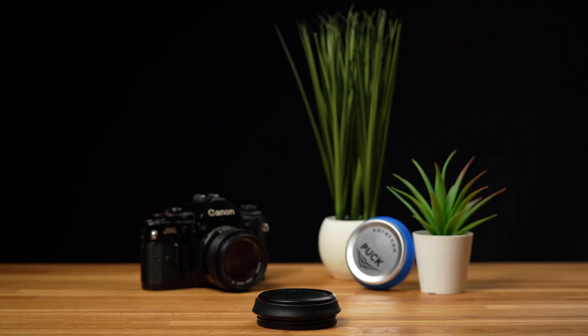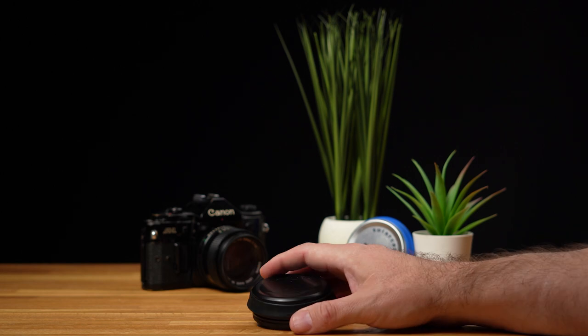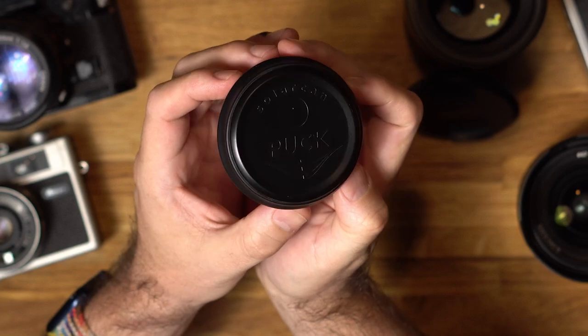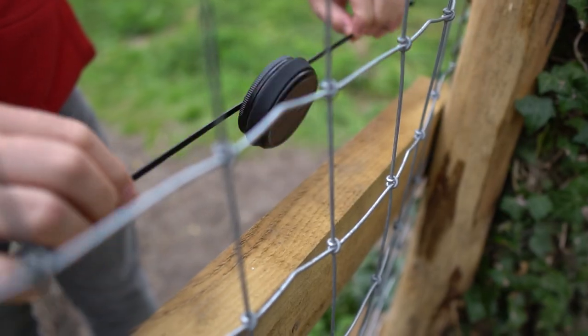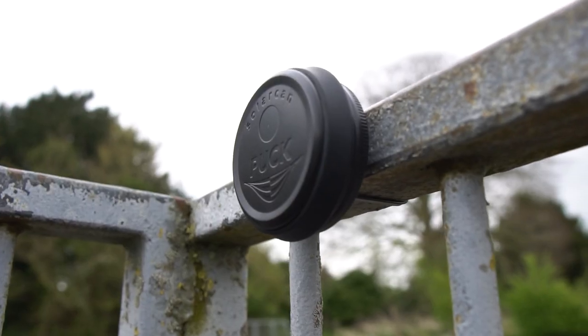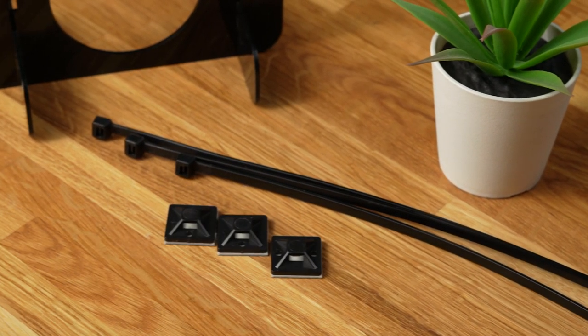But how does it work? Essentially, the puck is a camera in its purest form. To get started, find a sunny location, indoors or outside like a fence post or windowsill, and secure your puck with the attachments included.